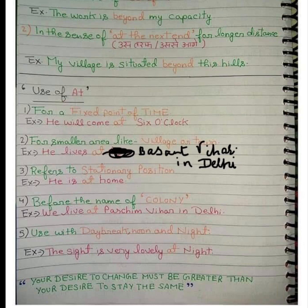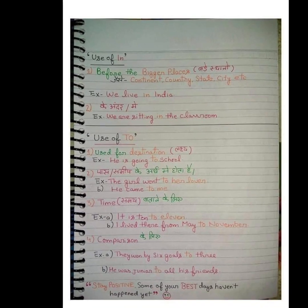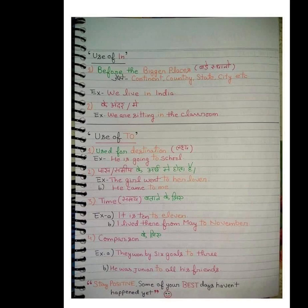'At' is also used with daybreak, noon, and night: the sight is very lovely at night. But for morning and evening, we use 'in': in the morning, in the evening. For night, we use 'at.' Now, the use of 'in': it is the simplest preposition. 'In' is used before bigger, well-known places — continent, country, state, city. We live in India.